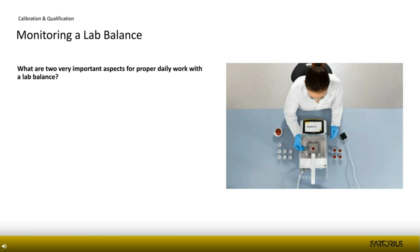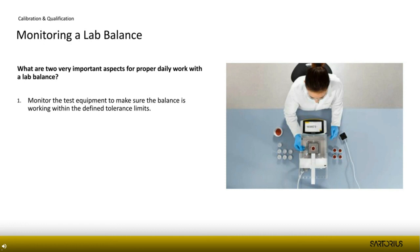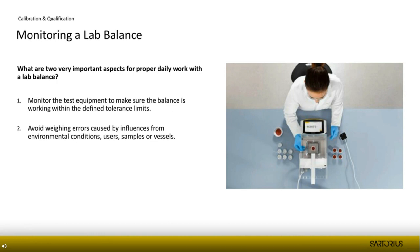Let's look first at the two main reasons to monitor a lab balance. The first is working with defined tolerance limits — when we exceed certain limits according to regulations or internal operating procedures, the equipment should remain inside those tolerances. The second is to avoid weighing errors caused by influences from environmental conditions such as airflow, vibrations, and also from users, the sample itself, or the vessels containing the sample.